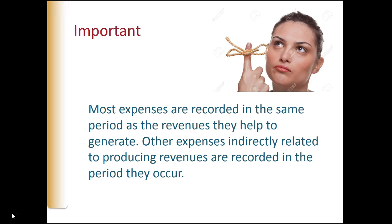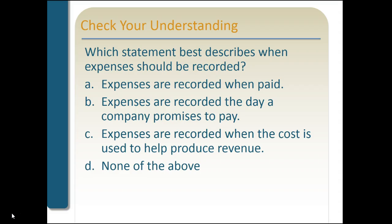Most expenses get reported in the same period as the revenues. Expenses indirectly related to producing revenues happen in whatever period they are incurred, but for direct relationships we match them. Let's check understanding: which statement best describes when expenses should be recorded? Options are: when they're paid, the day a company promises to pay, when the cost is used to help produce revenues, or none of the above. The correct answer is when they help to produce revenues.